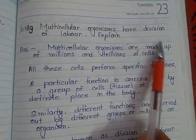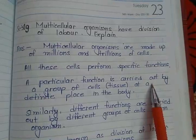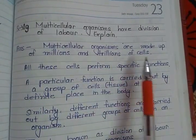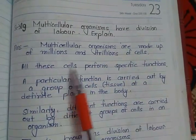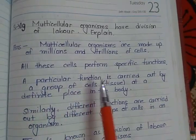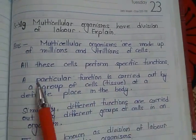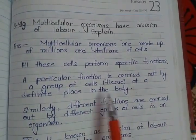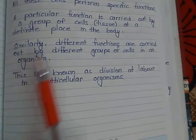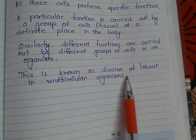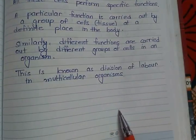Question 9: Multicellular organisms have division of labor. Multicellular organisms are made up of millions and trillions of cells, and all these cells perform specific functions. A particular function is carried out by a group of cells — called a tissue — where similar cells perform a similar function. Different functions are carried out by different groups of cells in an organism. This is known as division of labor in a multicellular organism.